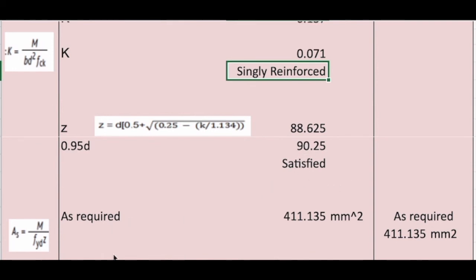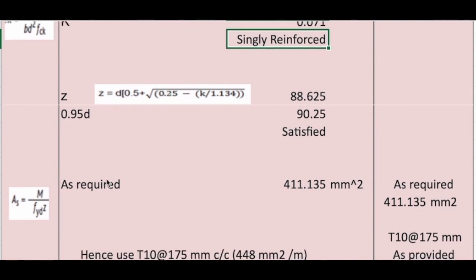After that, we have to find the As required. As required equation is M over fyk times z. M we know 15.89, fyk is 500 over 1.15. z we found now. So if we put all the data, we will get 411.134.